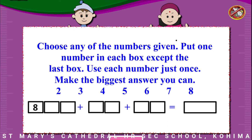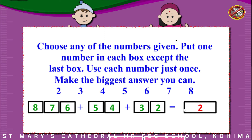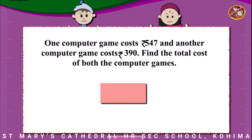Trying numbers: 2, 5, 6, 8. Then trying: 3, 5, 6, 7, 8. Find the total cost of both the computer games.